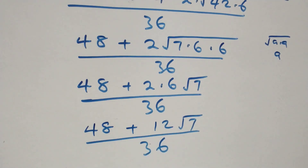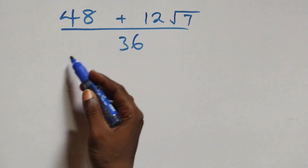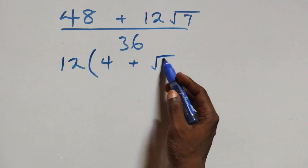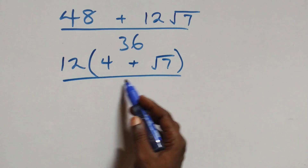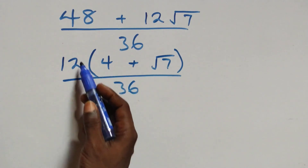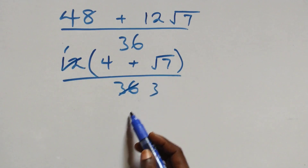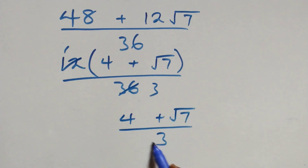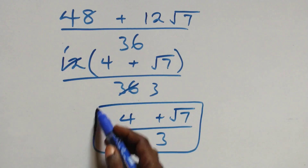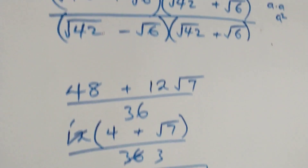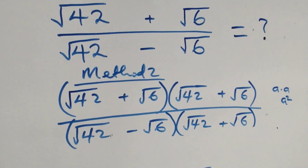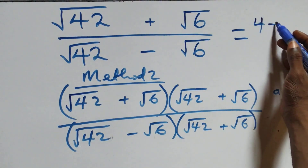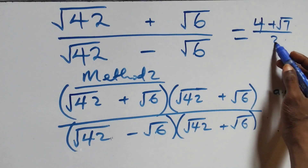Factoring 12 from the numerator gives 12(4 + √7) / 36. Dividing, 12/36 = 1/3, so we are left with (4 + √7) / 3 — the same answer as in Method 1.